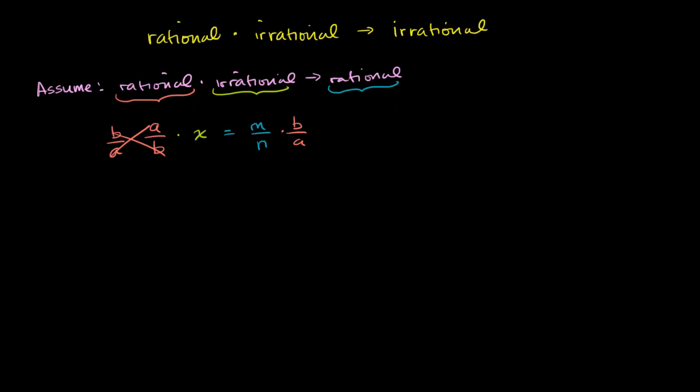We get our irrational number x being equal to m times b, or we could just write that as mb over na. So why is this interesting?